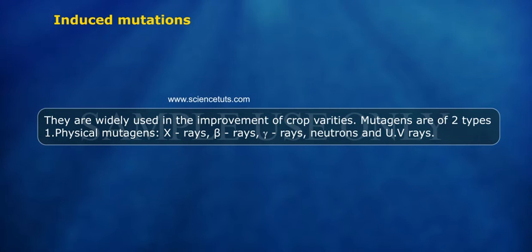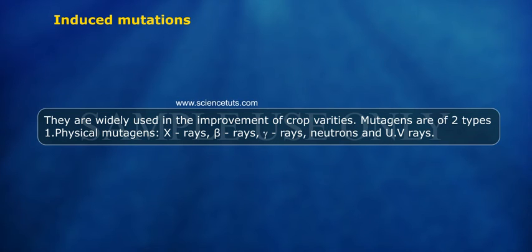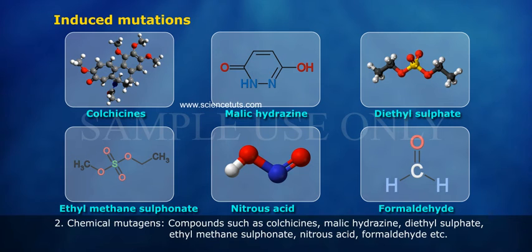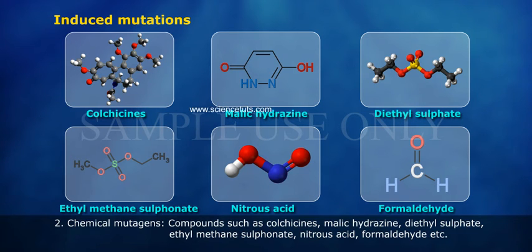Physical mutagens include X-rays, Beta rays, Gamma rays, Neutrons, and UV rays. Chemical mutagens include compounds such as Colchicine, Maleic hydrazide, Diethyl sulfate, Ethyl methane sulfonate, Nitrous acid, Formaldehyde, etc.